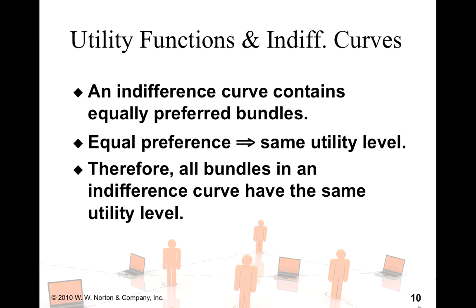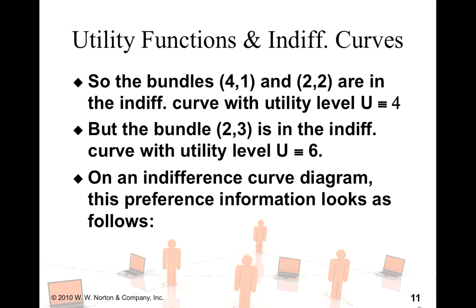An indifference curve contains equally preferred bundles, which means that all the bundles on one particular indifference curve have the same utility number assigned to them, which basically means that the consumer prefers all these bundles equally on the curve. For example, (4,1) and (2,2) get the number 4 and therefore both of these bundles are on the same indifference curve. However, the bundle (2,3) is preferred to the other bundles and therefore it gets number 6. It lies on a different indifference curve.